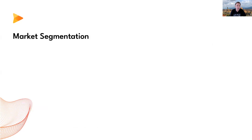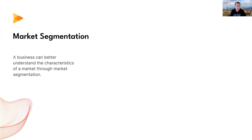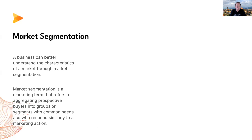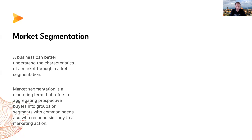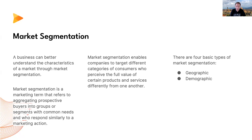Now let's talk about market segmentation. Market segmentation is a marketing term that refers to aggregating prospective buyers into groups or segments with common needs and who respond similarly to a marketing action. It enables companies to target different categories of consumers who perceive the value of certain products and services differently. There are four basic types of market segmentation: geographic, demographic, psychographic, and behavioral.